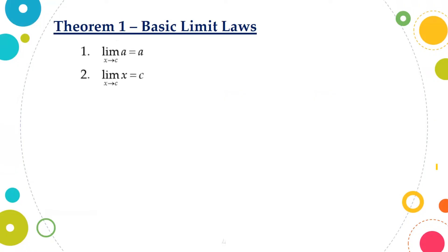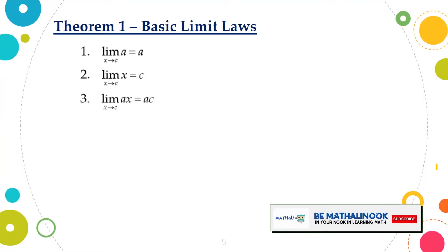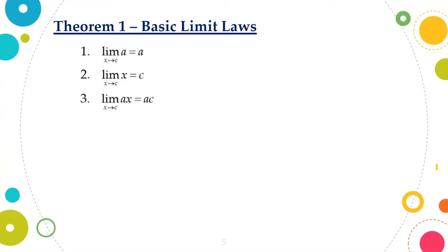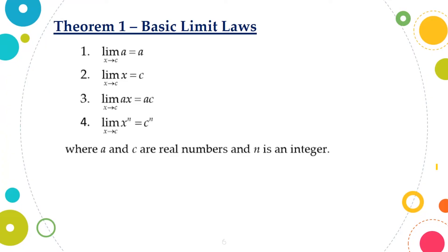Number 2, the limit of x as x approaches c is equal to c. Number 3, the limit of a times x as x approaches c is equal to a times c, wherein a is a constant number. And the limit of x raised to n as x approaches c is equal to c raised to n. Remember that all these 4 are applicable where a and c are real numbers and n is an integer.